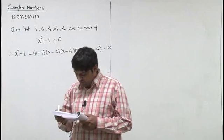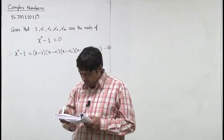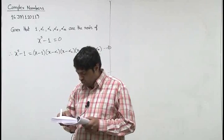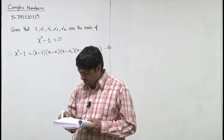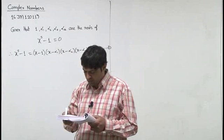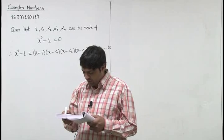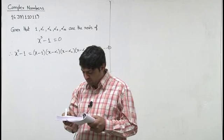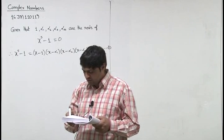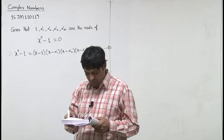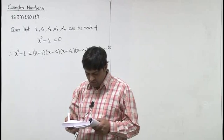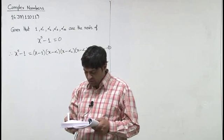Now, we have to find the value of (omega minus alpha 1)(omega minus alpha 2)(omega minus alpha 3)(omega minus alpha 4) upon (omega squared minus alpha 1)(omega squared minus alpha 2)(omega squared minus alpha 3)(omega squared minus alpha 4), where omega is the imaginary cube root of unity.